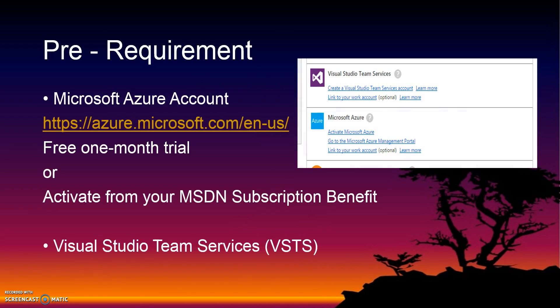Before we start, we need a Microsoft Azure account that you can get from the Microsoft Azure website. You can get one month free trial or you can get it from your MSDN subscription benefit. We also need a Visual Studio Team Services account to keep your performance test suite — you can create a new account when you set up your performance test, or use an existing account if you are the account owner.